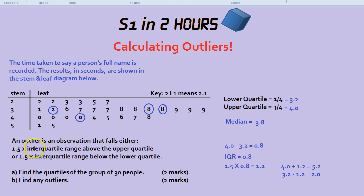Let's do 1.5 times it so we can start working things out. 1.5 times the interquartile range is 1.2. So we're going to go above the upper, 1.2 above the upper quartile and 1.2 below the lower quartile. 4.0 plus 1.2 is 5.2, that's above the upper quartile.